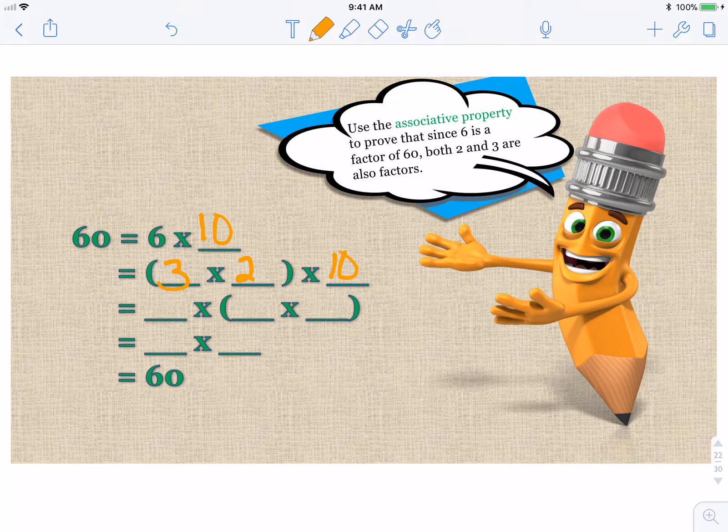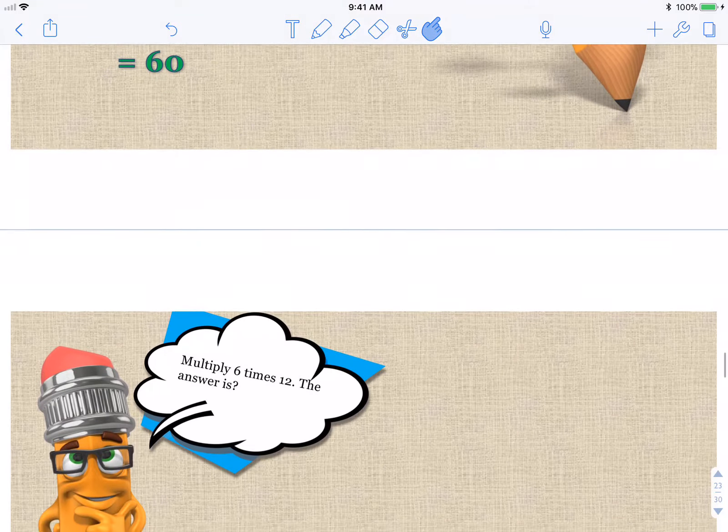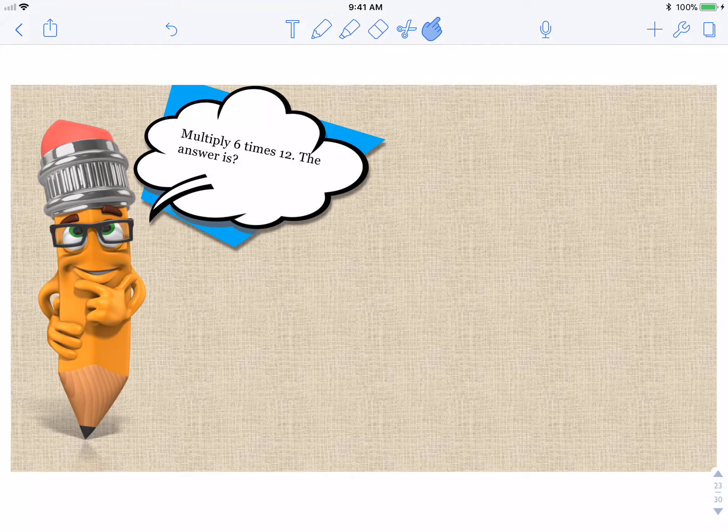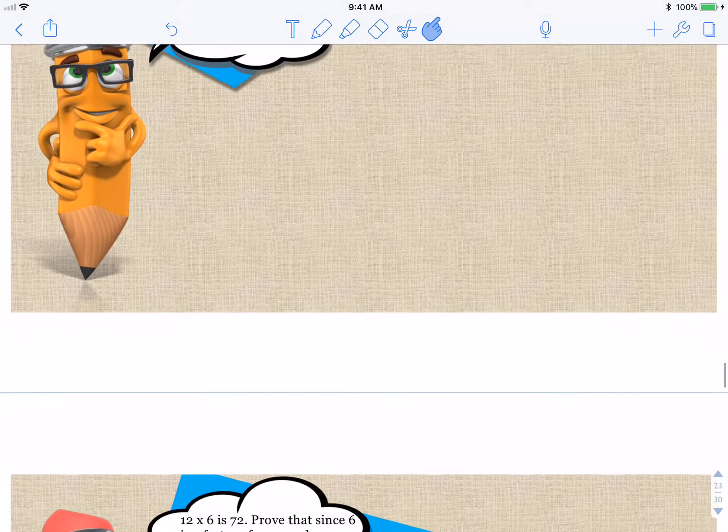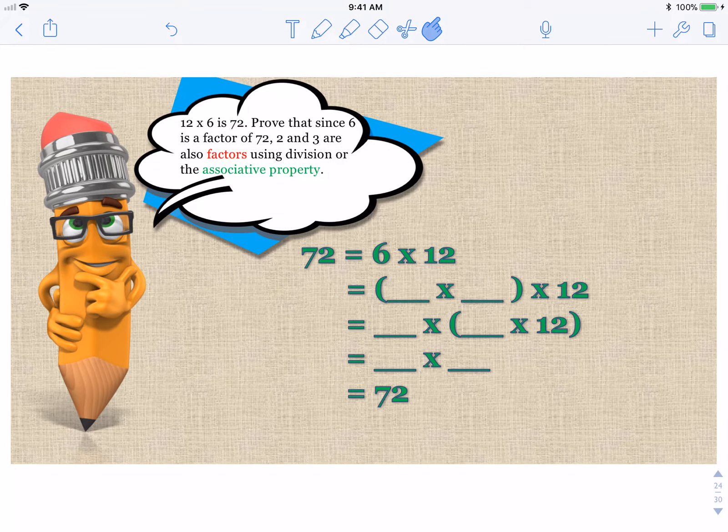Okay, we'll go back to that. So we have 6 times 10. That's how your work should look. We have, what makes up 6? 3 and 2. Remember those are the two factors we're trying to figure out. But anyways, 10 stays there. We're going to put 2 here and we'll do the big number with the 10. So is 30 times 2 60? Yes, it is. So 2 and 3 are also factors of 60. So are 6 and 10.